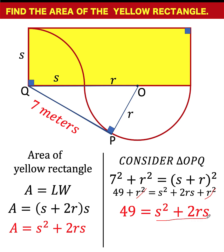Now, compare this s squared plus 2rs with the right side here, which is also s squared plus 2rs. They are exactly the same. So, by substitution, this becomes now 49 equals the value of s squared plus 2rs, which is the area of the yellow rectangle. And therefore, we now know that the area of this yellow rectangle is 49 square meters, and this problem is now solved.